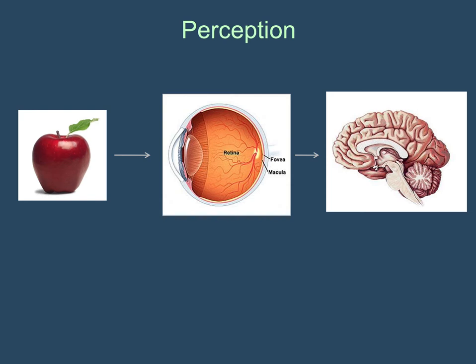There is the world, objects in the world; there is the eye, what the eye has inside it, how it responds, how it works; and then ultimately there is the brain. Now perception proper really refers to what the brain does with the information. So there is a difference between what comes into the eye and what we actually see.